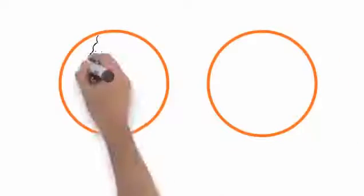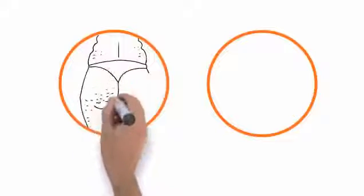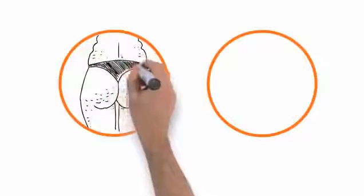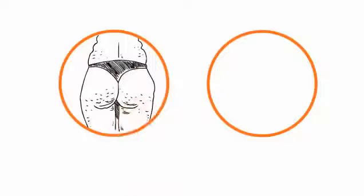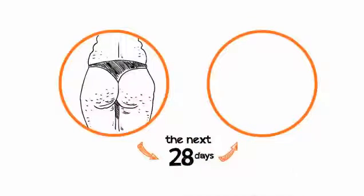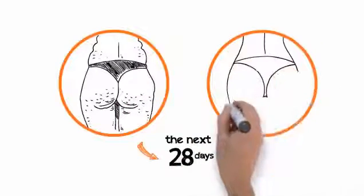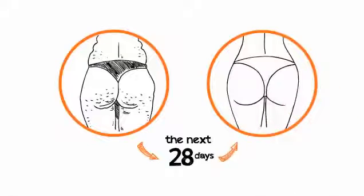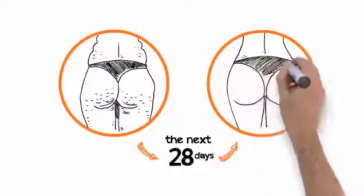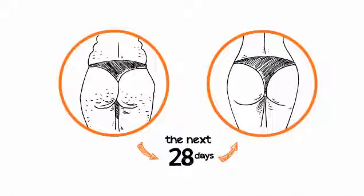In this video, you'll discover a powerful yet simple method to destroy the cellulite on your butt, hips, thighs, and legs within the next 28 days, leaving you with a smooth, tight, and sexy lower body. And you'll also get the swimsuit model secret of how to keep it that way forever.